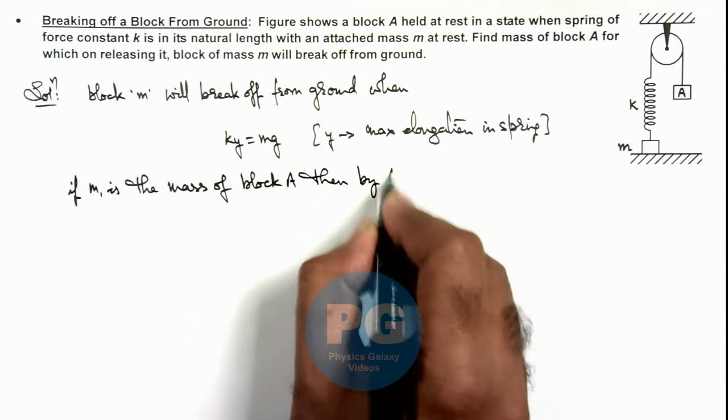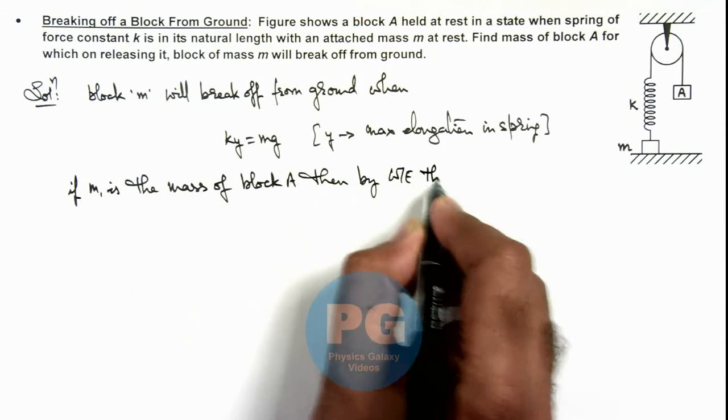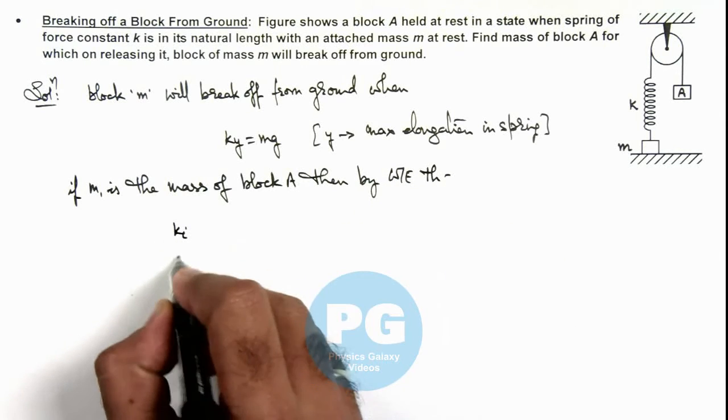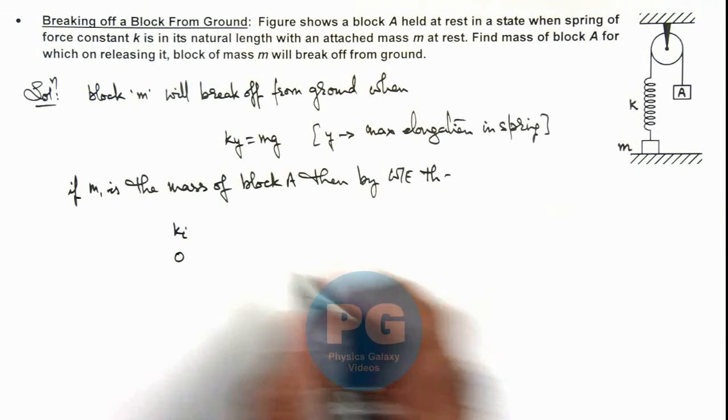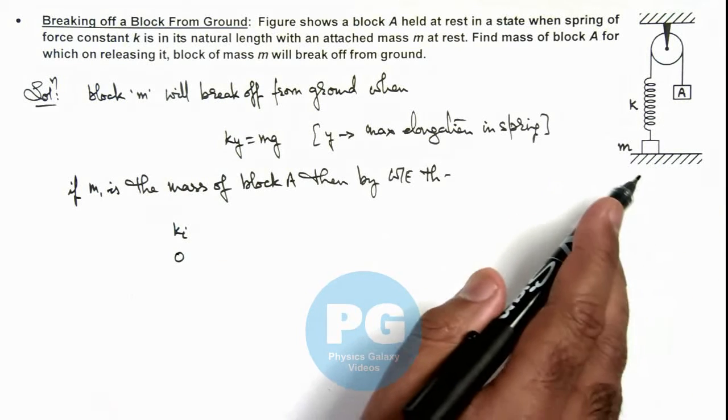Then by work energy theorem, we can write initial kinetic energy of block A and that of mass m is zero. So if it is fallen by a distance y.